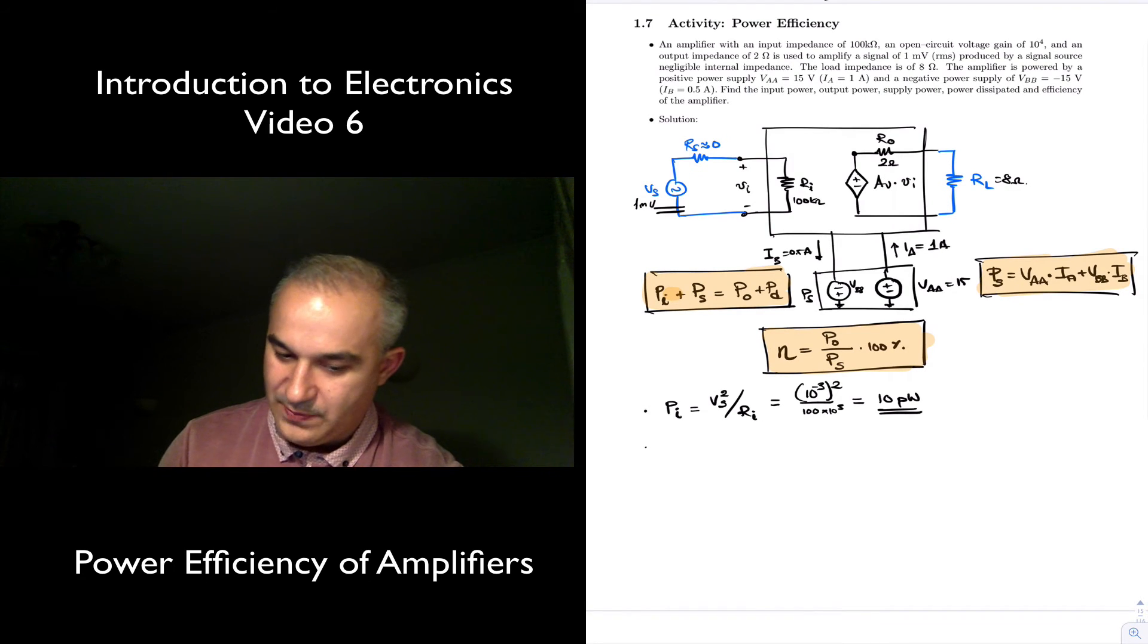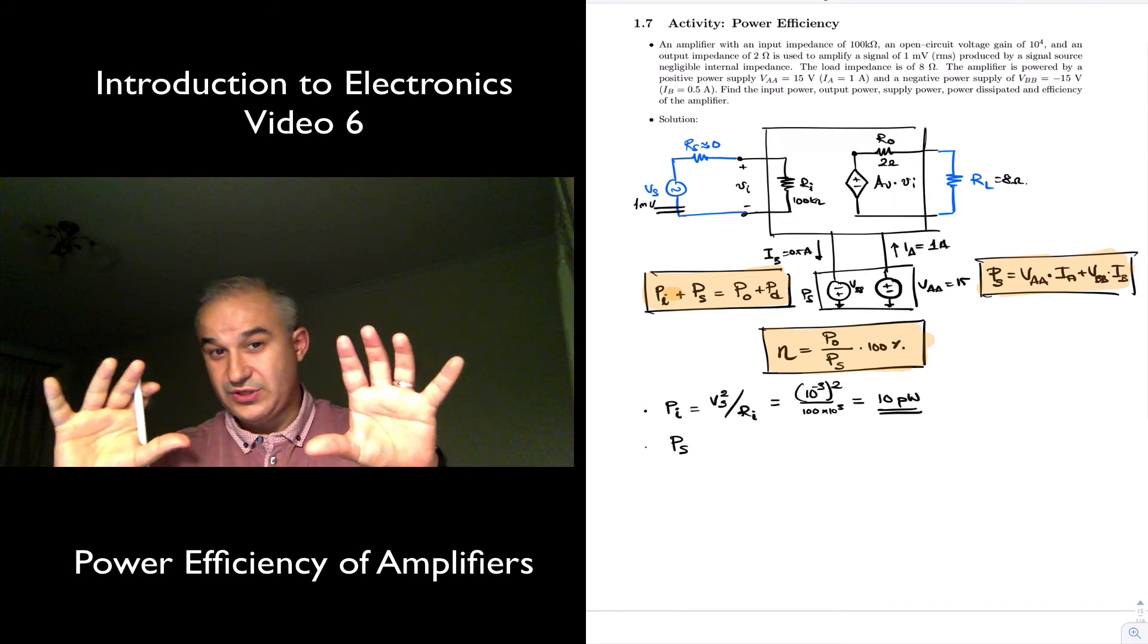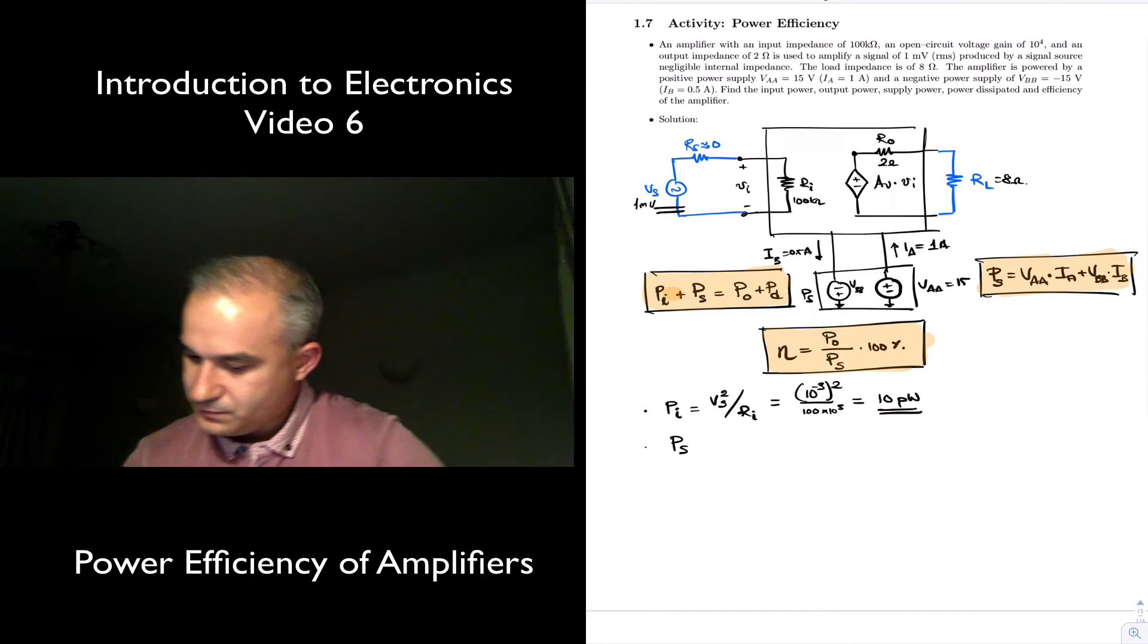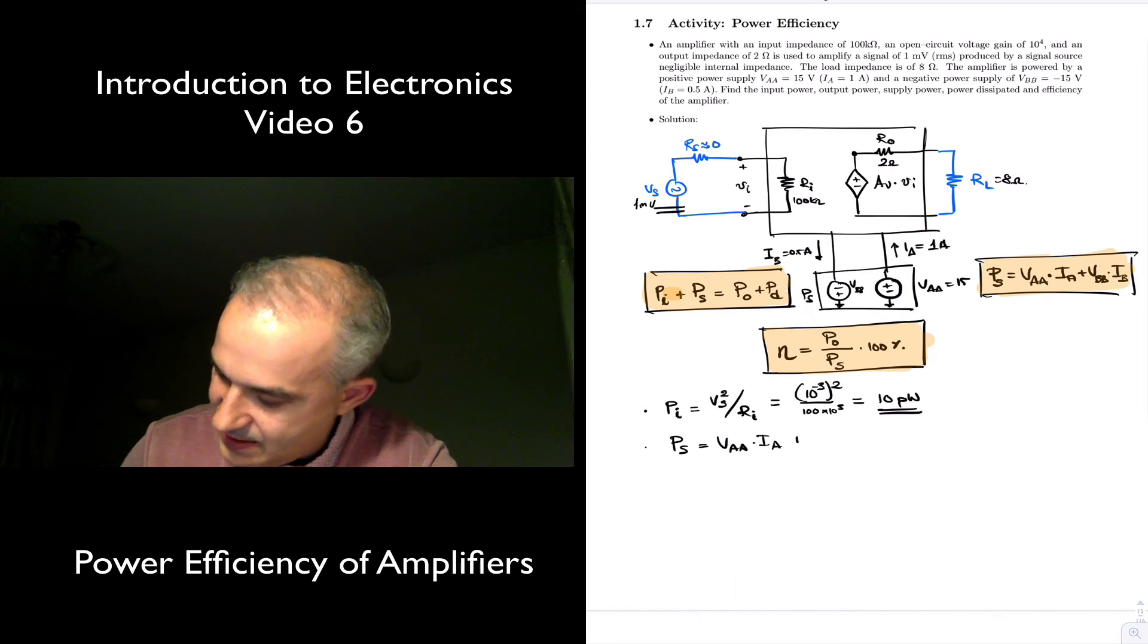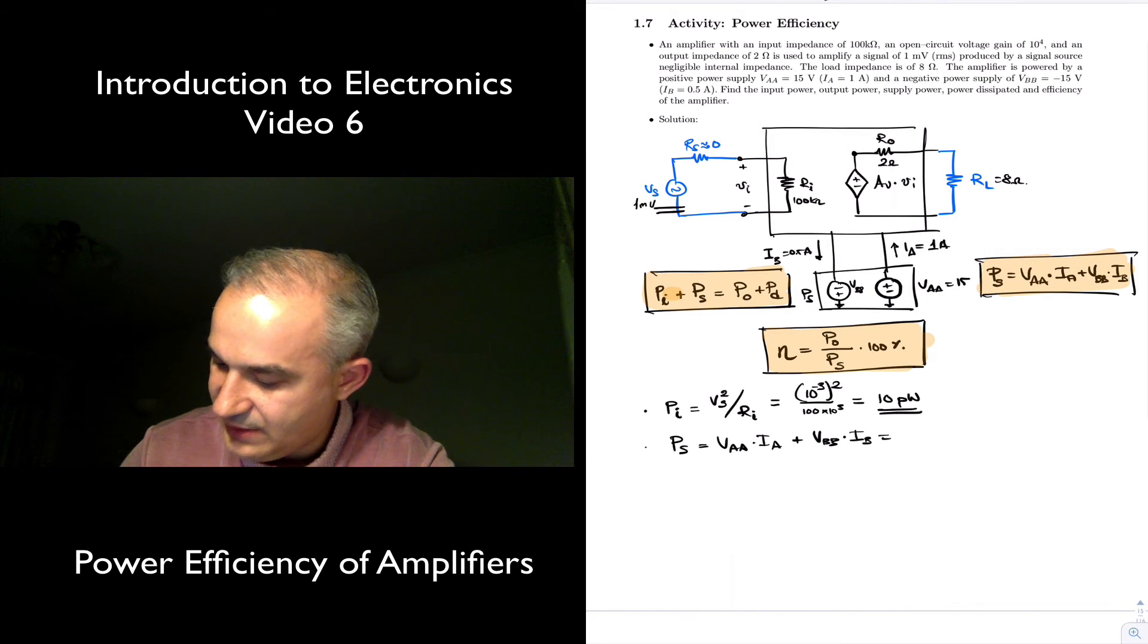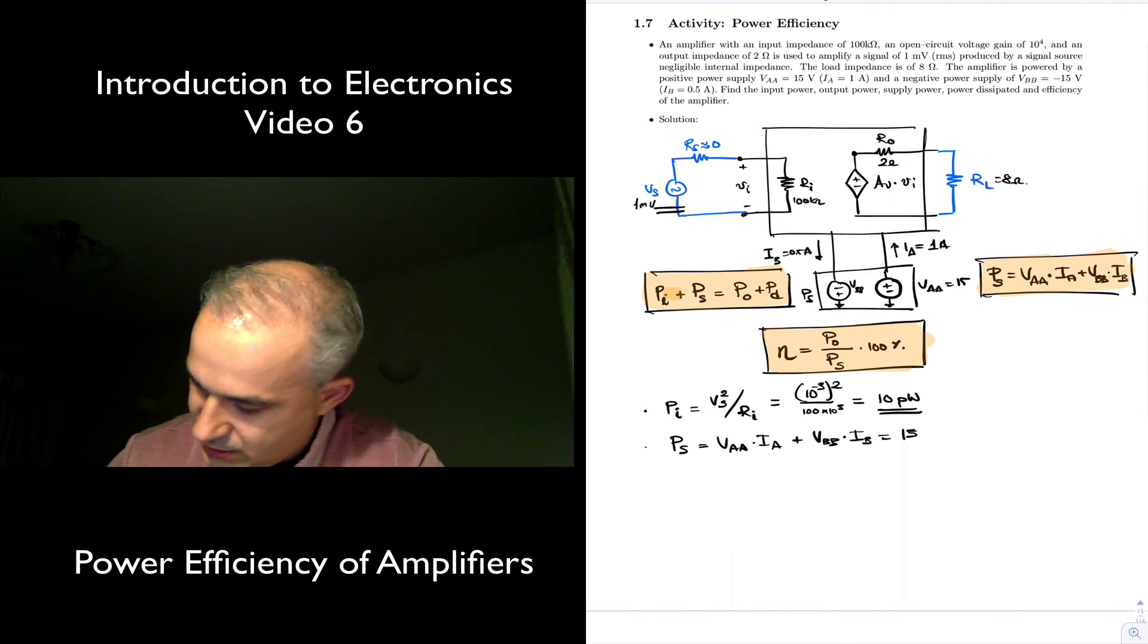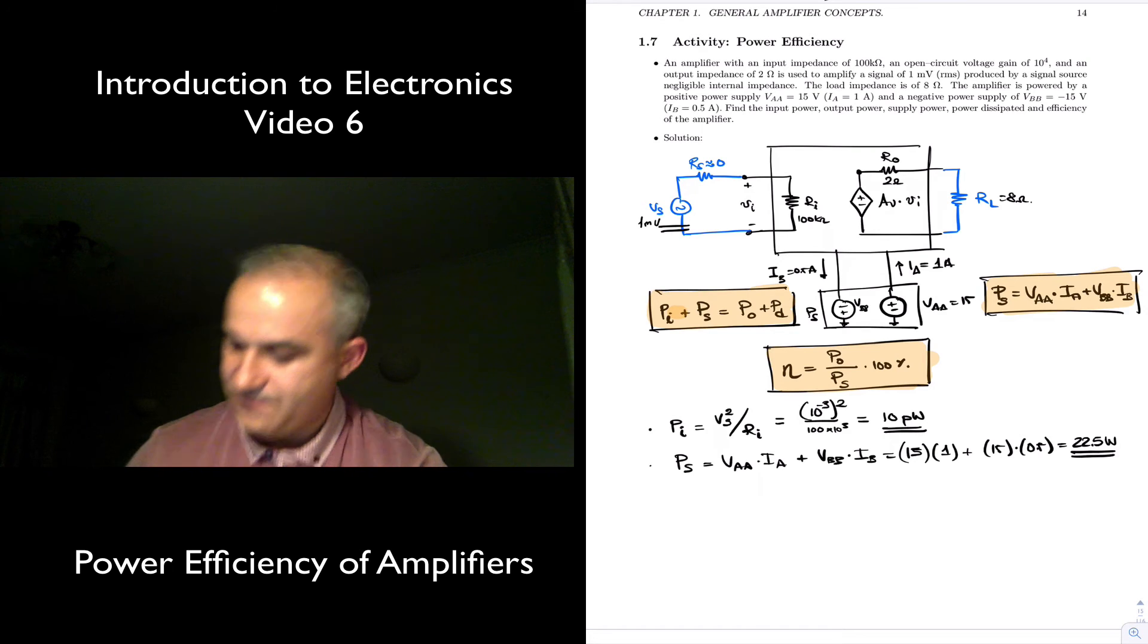Let's look at now the output power, or actually let's do the supply power. To see what is the power provided by the supply, we have two voltage sources, each one providing a current. So this is going to be VAA times IA plus VBB times IB, the voltage is 15 volts, times 1 amp, plus 15 volts times 0.5 amps, 15 plus 7.5, this is 22.5 watts.